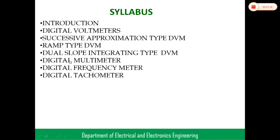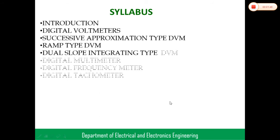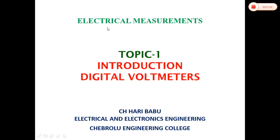Next is the digital multimeter — we have already used multimeters in the lab to measure parameters like voltage, current, and resistance in both AC and DC. Next is the frequency meter, used to measure frequency, and the digital tachometer, used to measure speed. This brings us to Topic 1: Introduction to Digital Voltmeters.